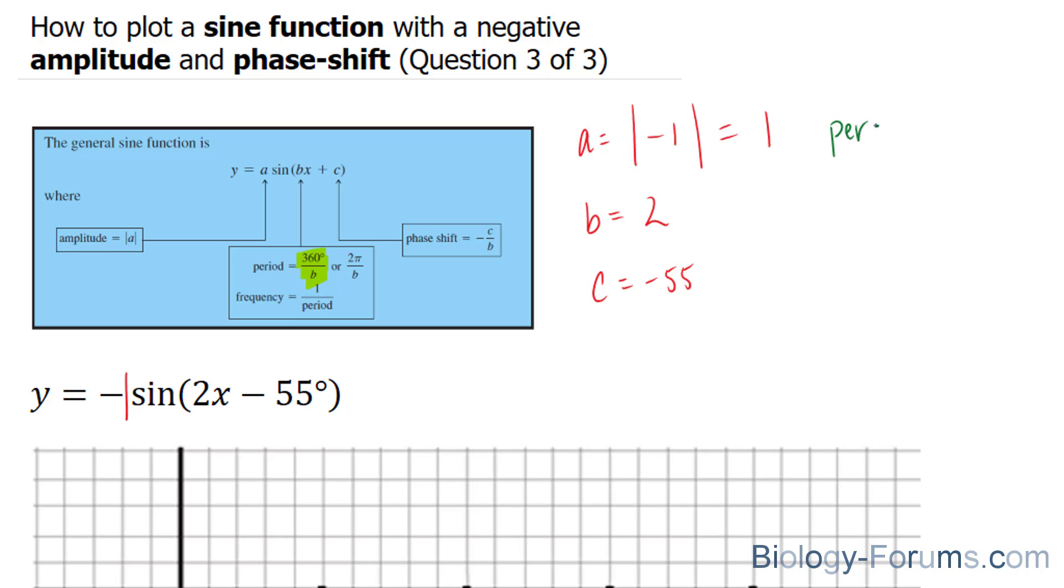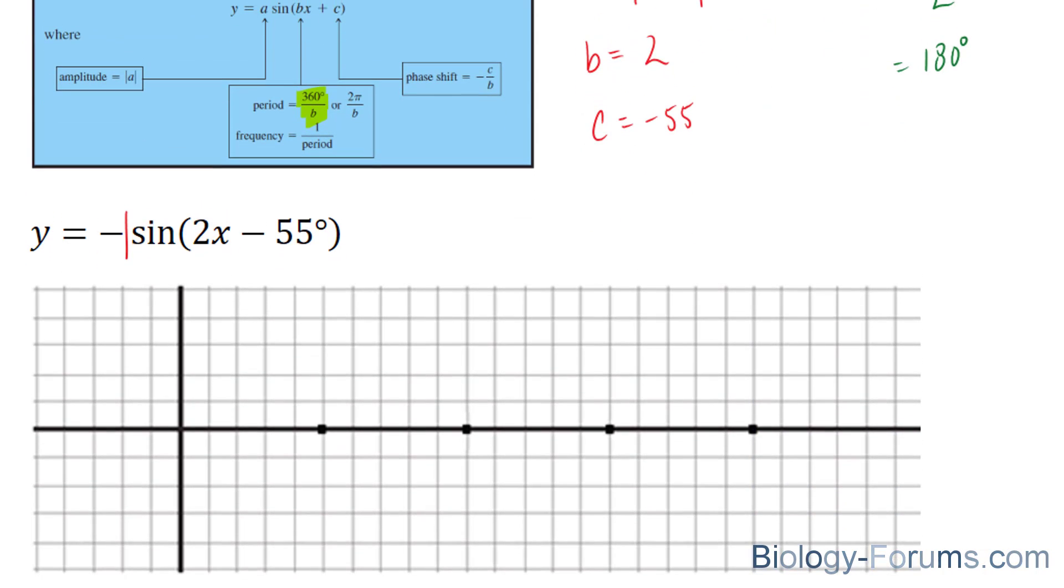Period is equal to 360 degrees divided by 2. Our period, therefore, is equal to 180 degrees per cycle. So I'm going to illustrate this some point from the origin, right here, 180 degrees.